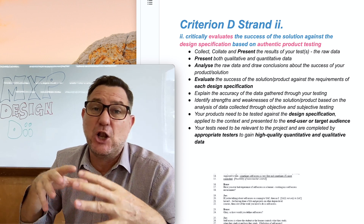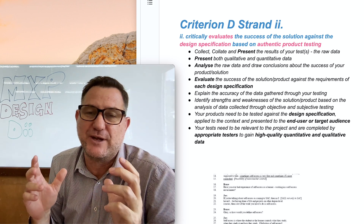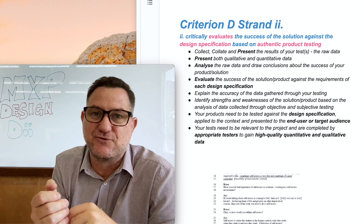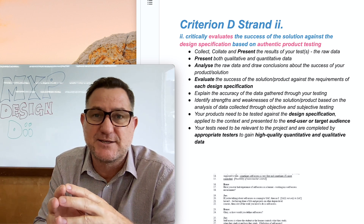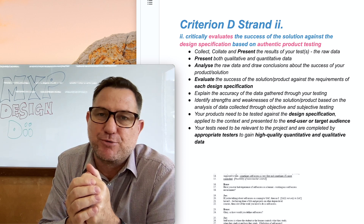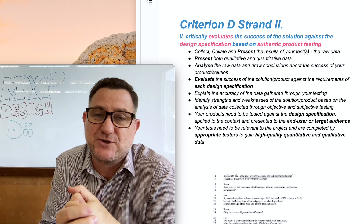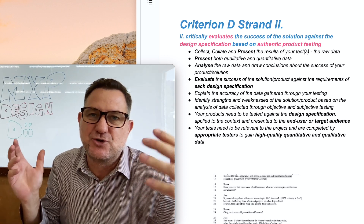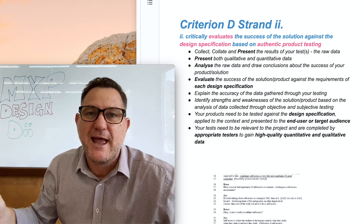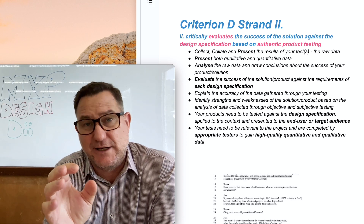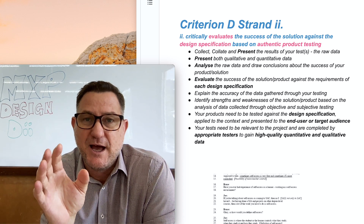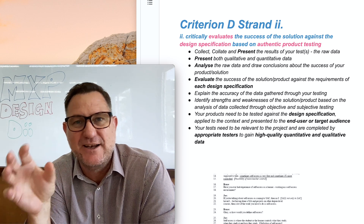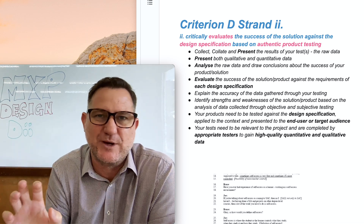Quantitative data involves lots of numbers — often in the form of measurements or time trials. You could also collect this data through a survey sent to your target audience — 10, 20, 50, or 100 people — where the data you collect is scores and rating systems, such as rating something out of five or out of ten.